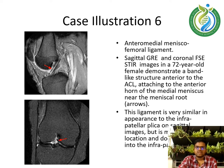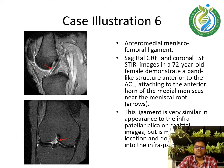Case illustration 6 shows the anteromedial meniscofemoral ligament. Sagittal GRE and coronal FSE still images in a 72-year-old female demonstrate a band-like structure anterior to the ACL attaching to the anterior horn of the medial meniscus near the meniscus root. This ligament is very similar in appearance to the infrapatellar plicae on sagittal images but is more medial in location and does not extend into the infrapatellar fat pad.